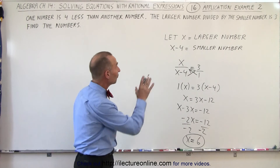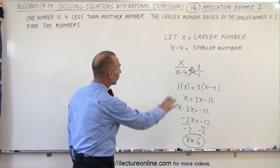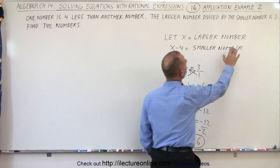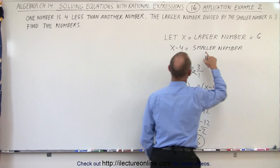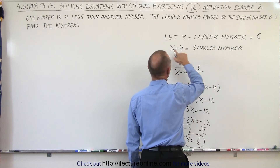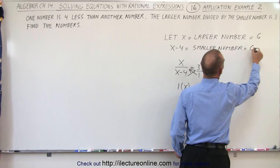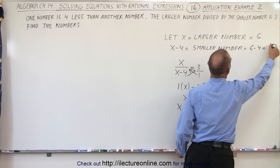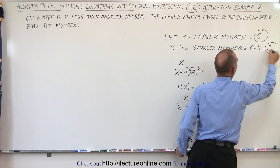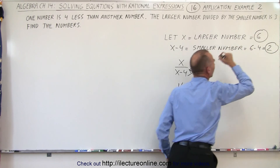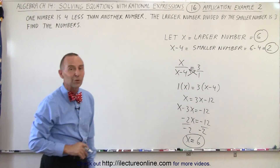And now let's go back to how we defined the numbers. The larger number was defined as x, so therefore the larger number is equal to 6. The smaller number is the larger number minus 4, which would be equal to 6 minus 4, which is equal to 2. So the two numbers are: the larger number equals 6, and the smaller number is equal to 2.